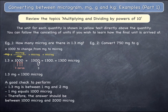Example 2, convert 750 milligrams to grams. Since you are changing from milligrams to grams, you must divide the starting quantity by 1,000.